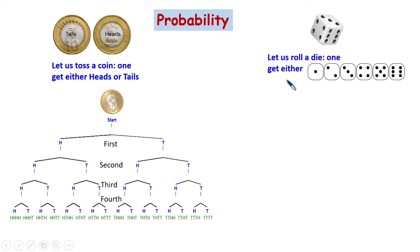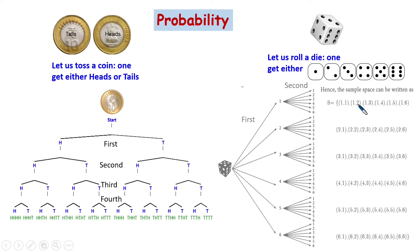If you have a die — a singular is called a die and plural is called dice — let us roll a die. On the top face you get one or two; there are six possibilities. For the coin, there are two possibilities; for the die, there are six possibilities. So it becomes more complicated.